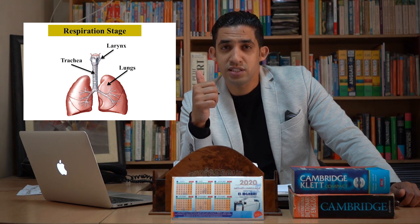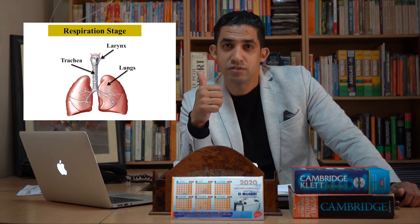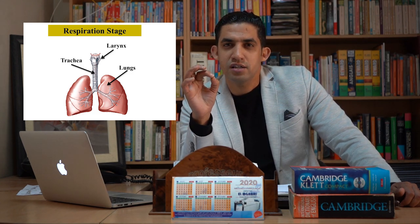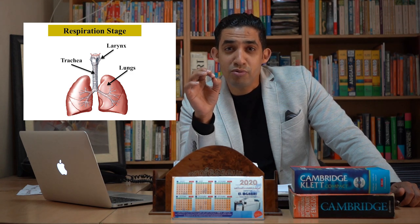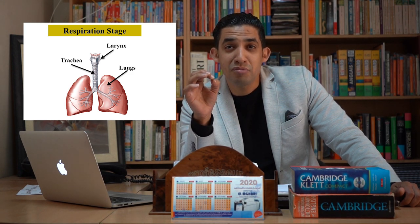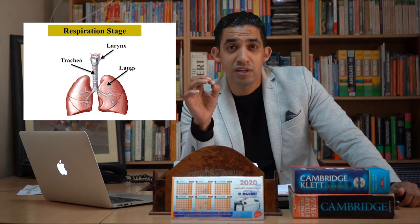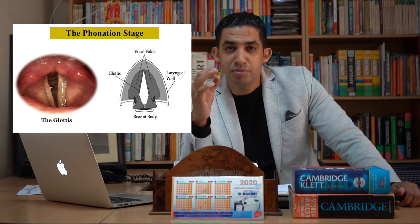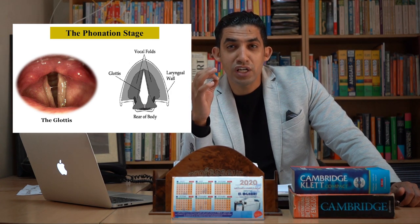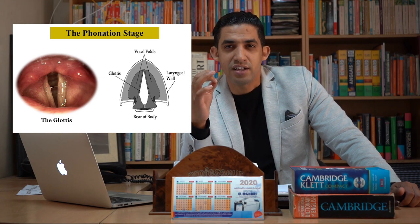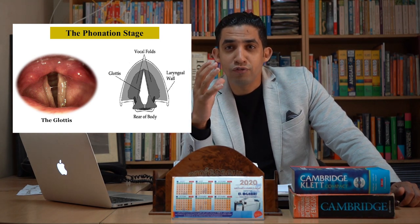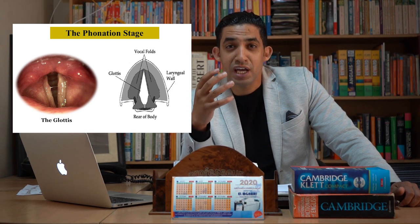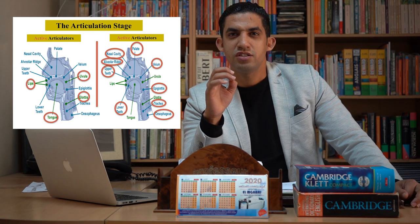The first stage is respiration. At this stage, speech sounds are produced by pushing air through the lungs in the respiratory system — at this point we have air, not yet a sound. The second stage is phonation, when the air becomes a voice at the larynx, where the opening of the vocal cords transforms air into voice.